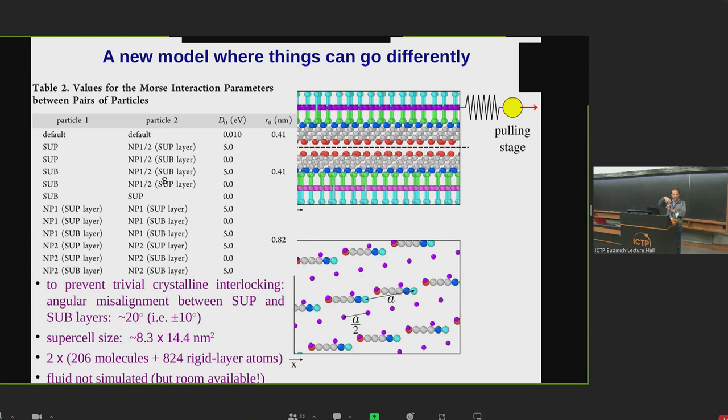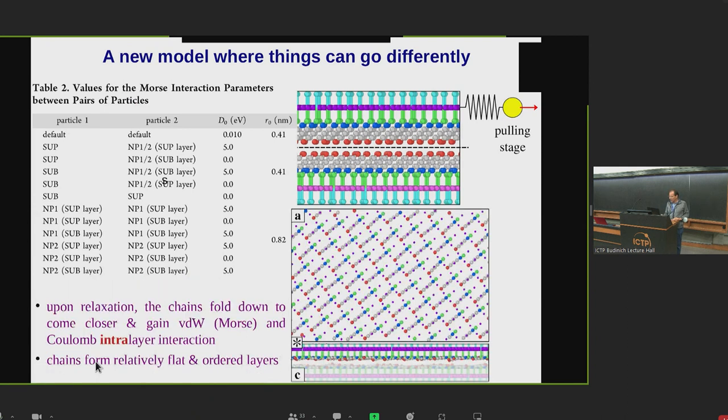To prevent that there is some trivial crystalline locking, the two crystals are rotated one with respect to each other. There is a twist angle of 20 degrees. So we simulate a supercell of about 100 square nanometers with 206 molecules per layer. This is the initial position. After this initial position, all these interactions, the coulombic and the various interactions, they tend to relax the chains and they tend to form some kind of ordered layer like this. Because they are planted regularly and they attract each other, the chains get lower down and they get to some quite ordered layer positions.